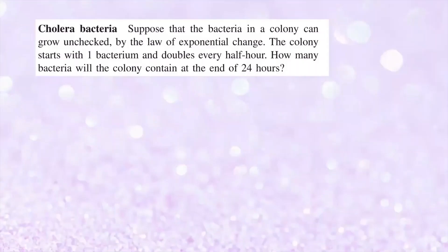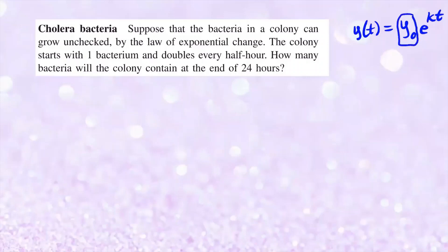Now let's take a look at an example. Since we know we're going to use the model y of t equals y-naught e to the kt, to come up with a specific model we need to figure out what y-naught is — the initial amount — and what k is. Once we have those, we can answer any questions. Let's look at this problem: suppose that bacteria in a colony can grow unchecked by the law of exponential change, so we know we're using this model.